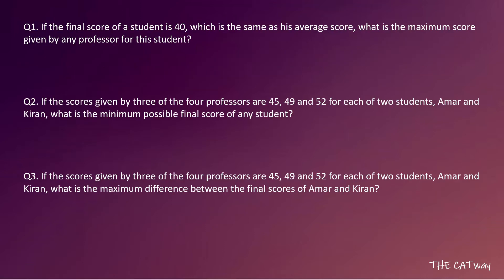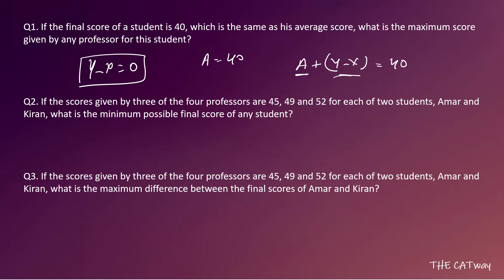The first question says: if the final score of a student is 40, which is the same as his average score, what is the maximum score given by any professor for this student? That means A equals 40 and A plus Y minus X also equals 40, so Y minus X must equal 0.